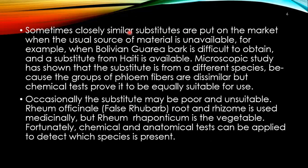Sometimes closely similar substitutes are put on the market when the usual source of material is unavailable. For example, when Bolivian Bauria bark is difficult to obtain, a substitute from Haiti is available. Microscopic study has shown that the substitute is from a different species because the groups of phloem fibers are dissimilar, but chemical tests prove it to be equally suitable for use. Occasionally, the substitute may be poor and unsuitable.